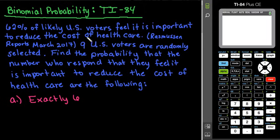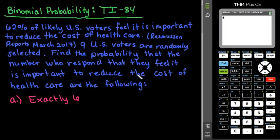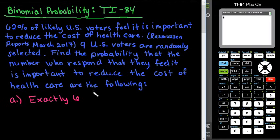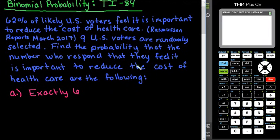For this problem, we have 62% of likely U.S. voters feel it is important to reduce the cost of health care. This was found from Rasmussen Reports in March of 2017. Nine U.S. voters are randomly selected. We are going to find the probability that the number who respond that they feel it is important to reduce the cost of health care are the following. The first one is the probability that exactly six of the nine respond that way.